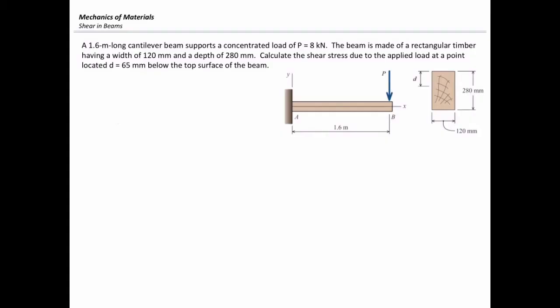In this problem, we want to determine the value of shear stress at a certain point which is located 65 mm below the surface of the beam. The basic equation that I need to use here is shear stress equals VQ over IT, and I need to determine each of these four parameters one by one.